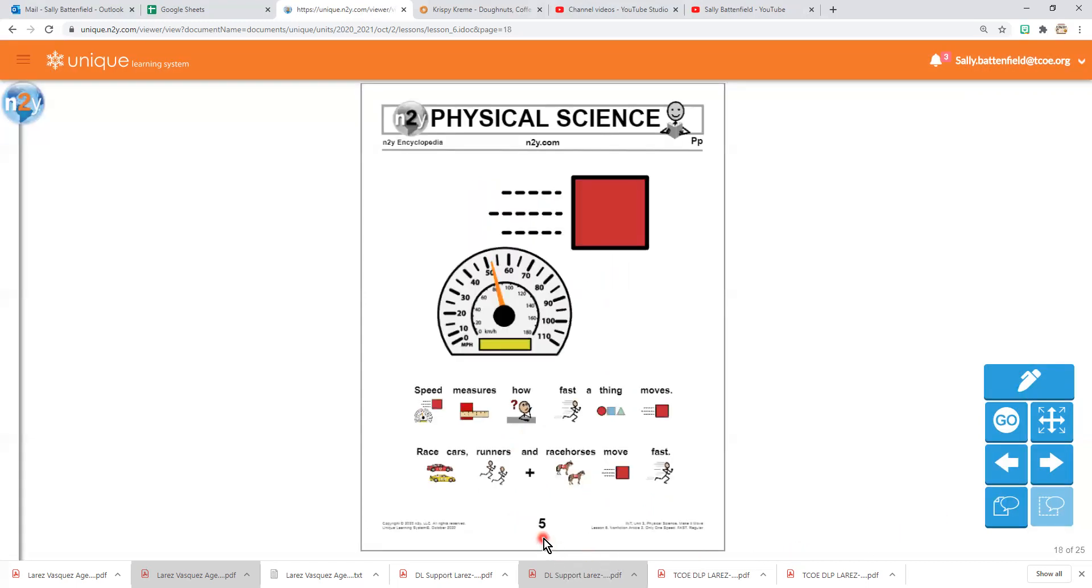Page 5. Speed measures how fast a thing moves. Race cars, runners, and race horses move fast.